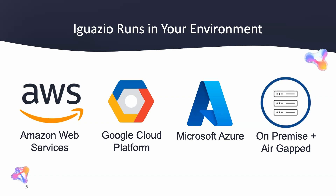Iguazio runs in your environment. Whether this is in your cloud VPC or on your on-premise server, the experience is exactly the same. We support all three of the major cloud providers as well as on-premise servers, including servers that are air-gapped, so we don't require internet to operate. So if you're in a remote location, this is a great choice. You can take work that you've done in Amazon and move it to Google, Azure, or your on-premise server. For organizations with hybrid or multi-cloud setups, this is an excellent choice and will not lock you into one particular cloud provider.